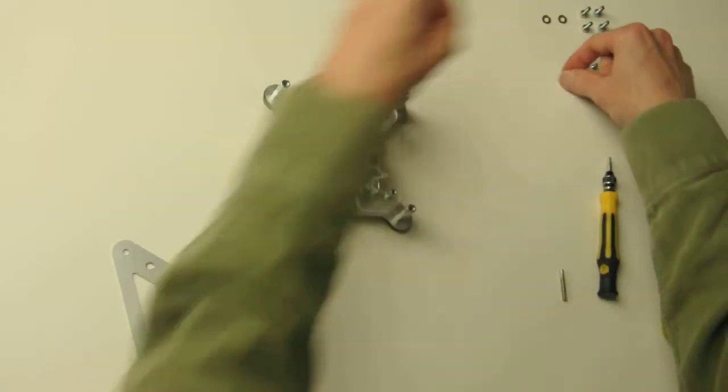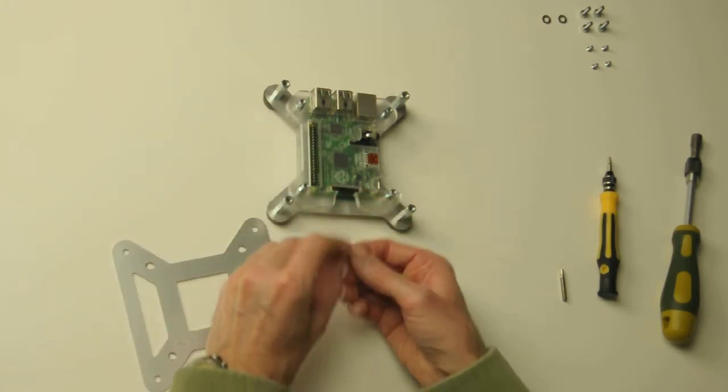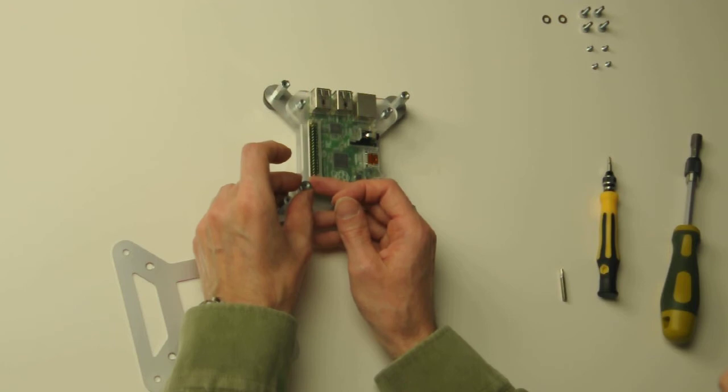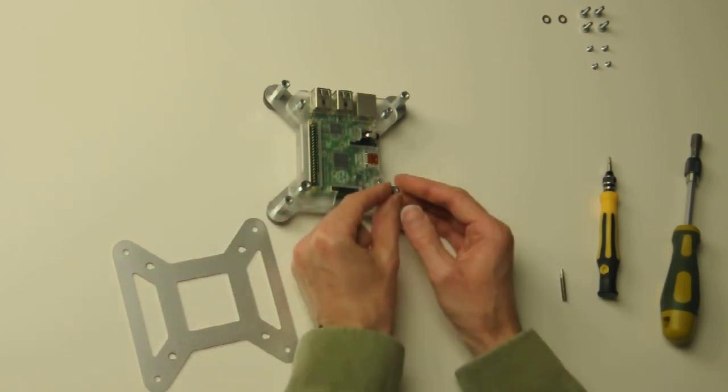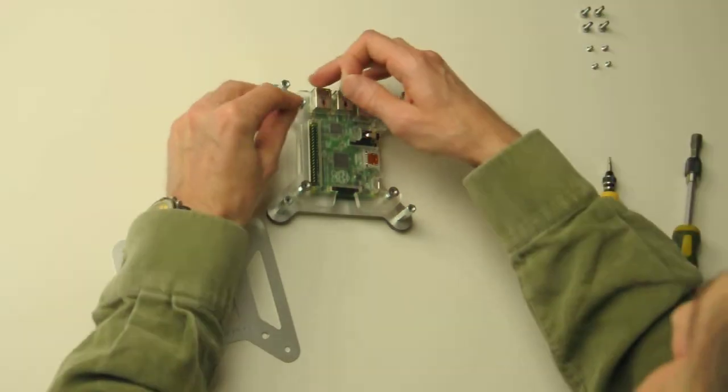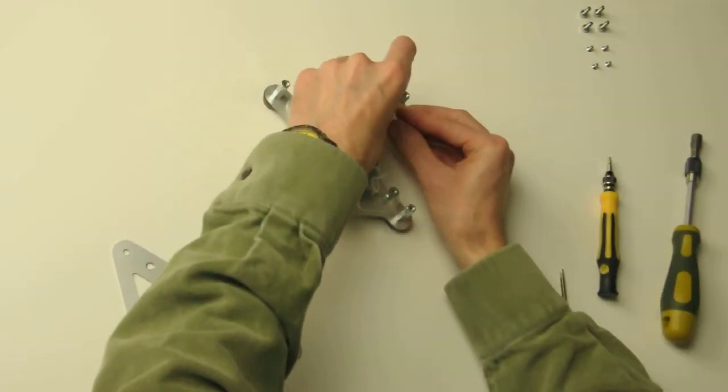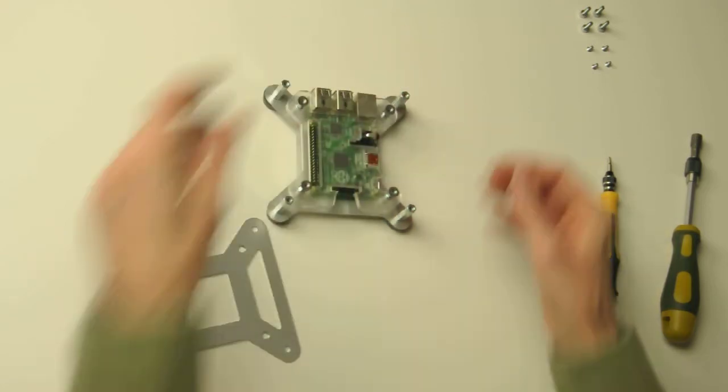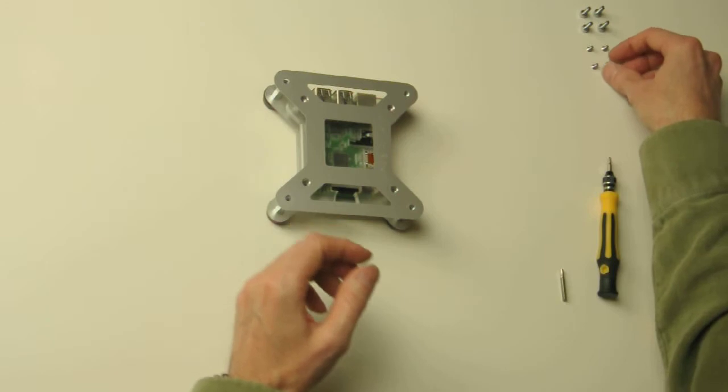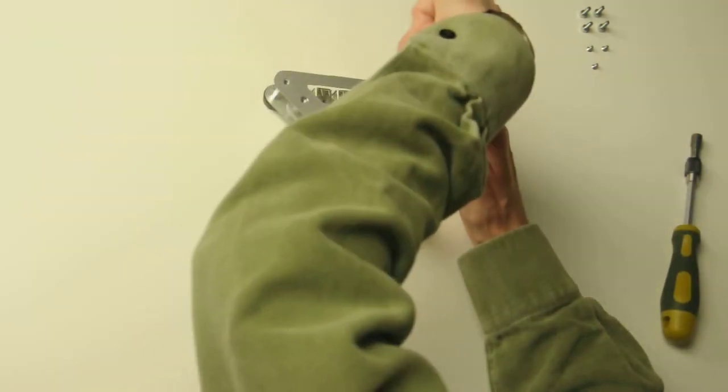Then again to make a small cavity to receive the last countersunk screws. Four M4 washers. The top plate. And then the 6mm long M3 countersunk screws.